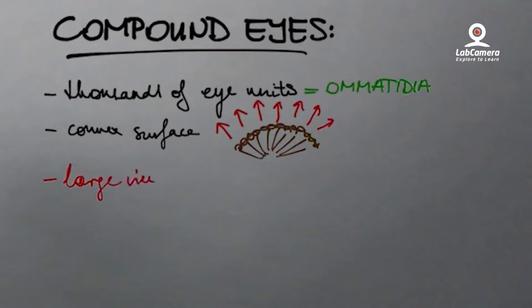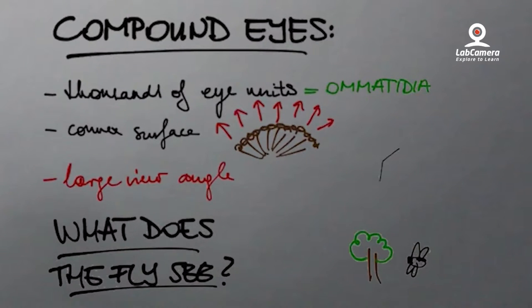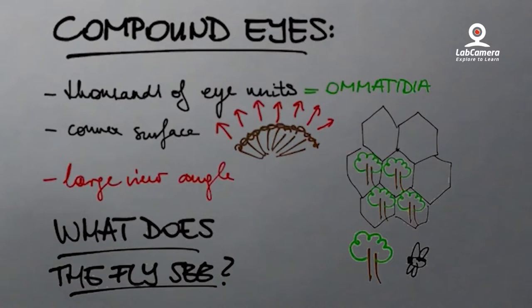Therefore, compound eyes possess a very large view angle and can detect fast movement. The big question is, what does the fly see then? It's a combination of the inputs from the numerous eye units, each forming a separate image, resulting in a mosaic-like picture.